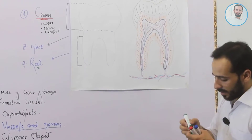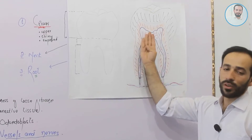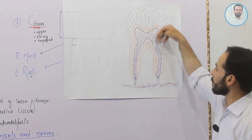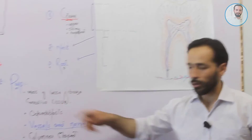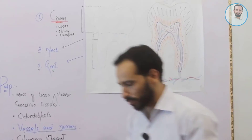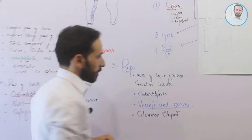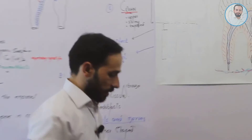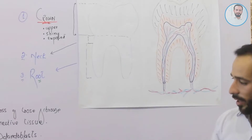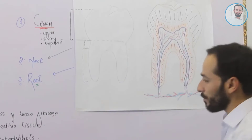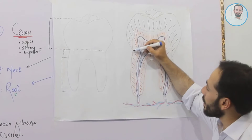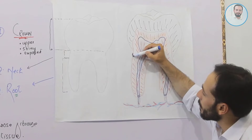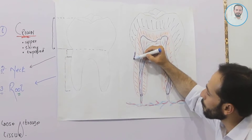These are the three main parts of the tooth: the first one is enamel, the second one is dentine, and the third one is the pulp of the tooth. The important point: the pulp of the tooth contains blood vessels and nerves.